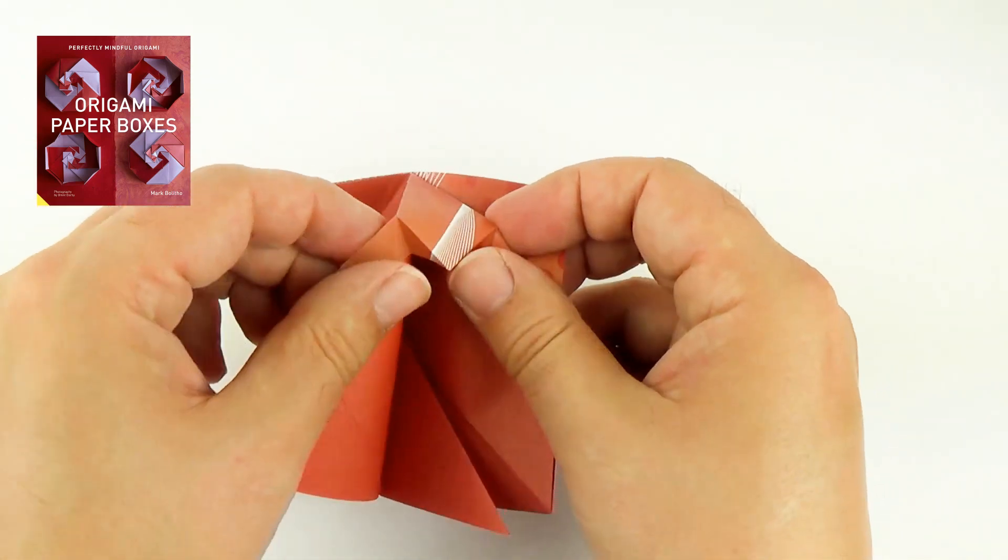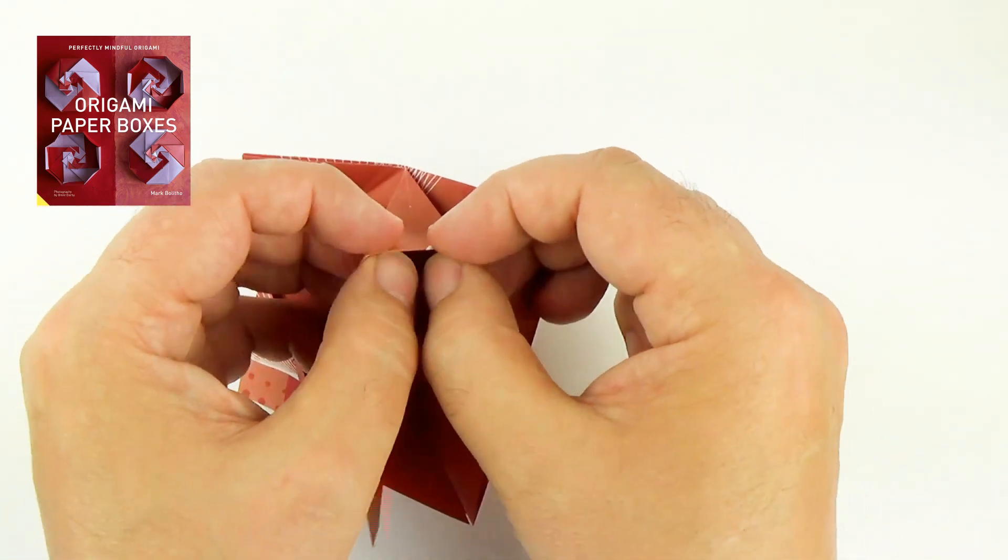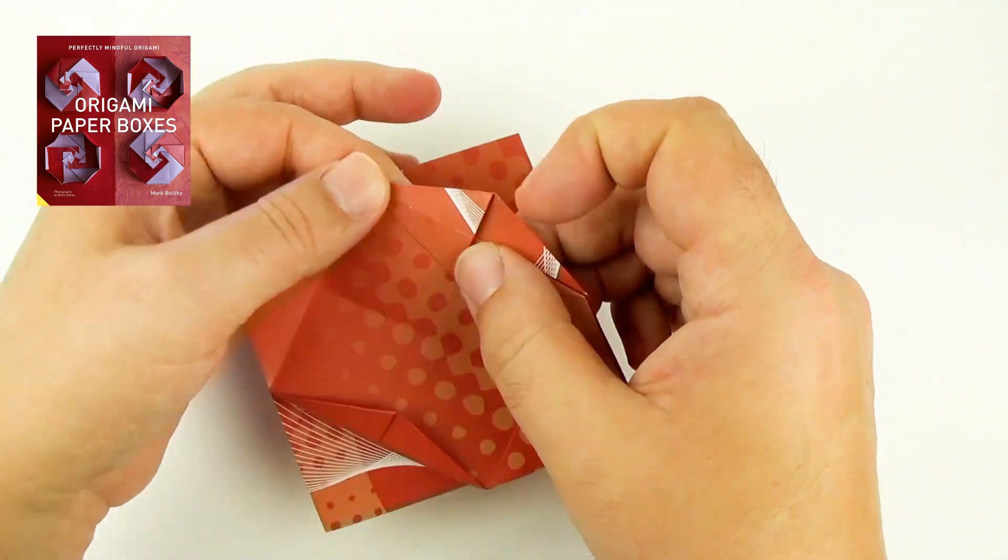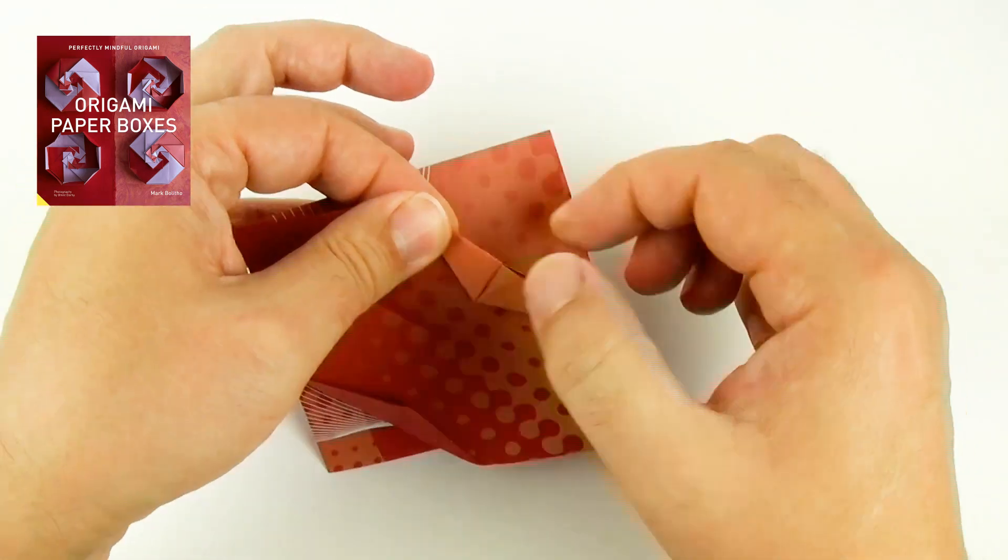Fold it back. Open the section, and then fold the corner inside. Fold the point behind.